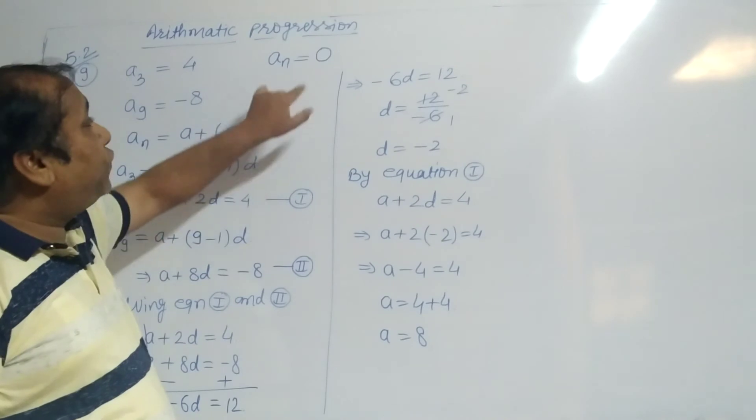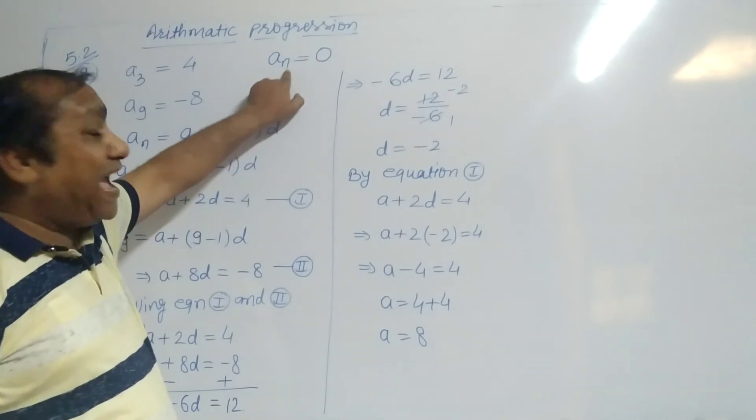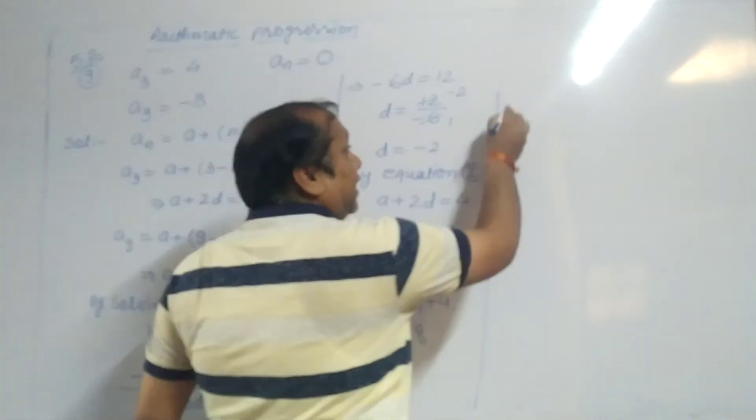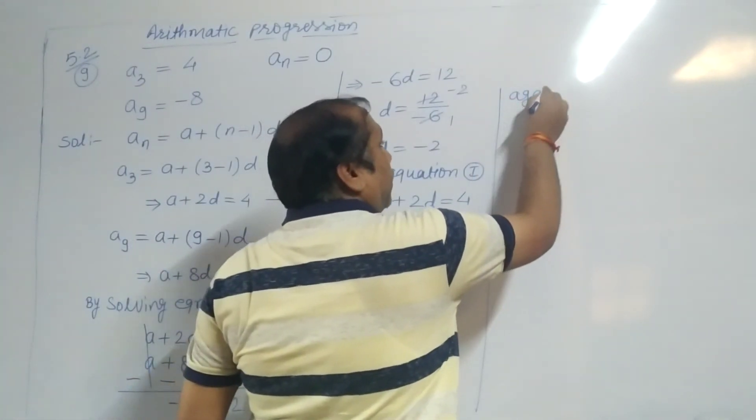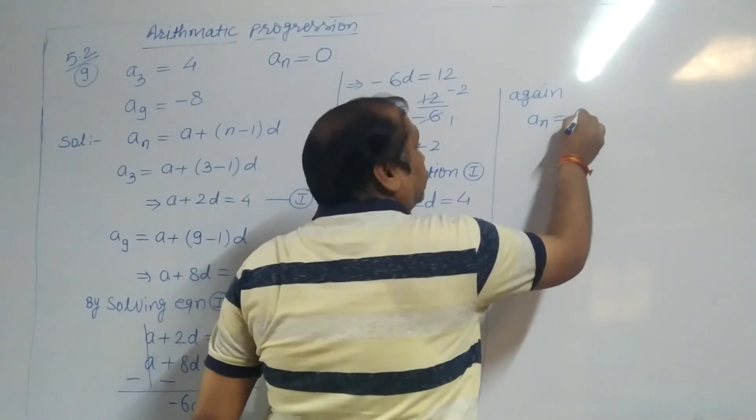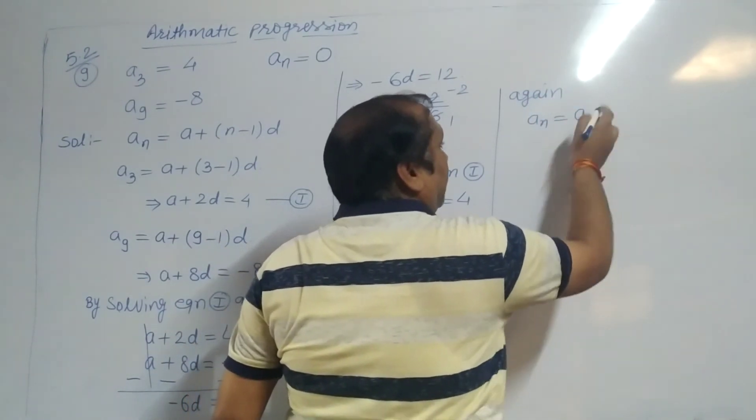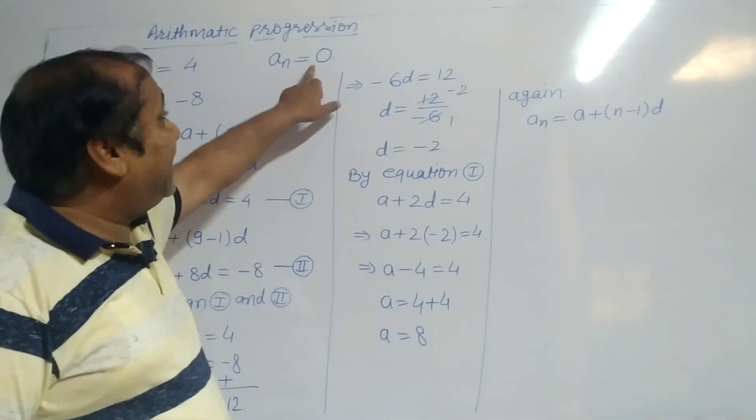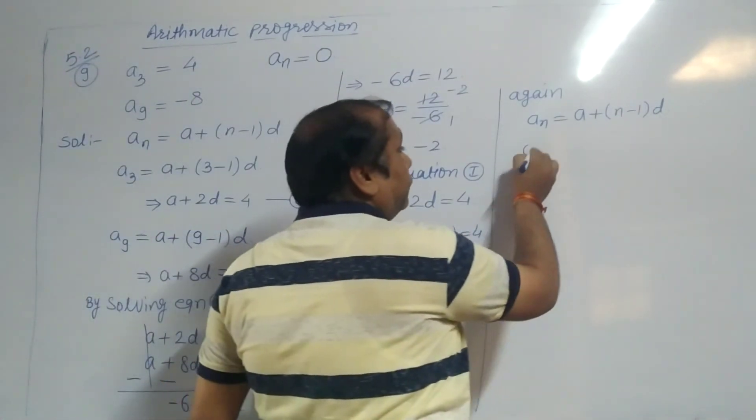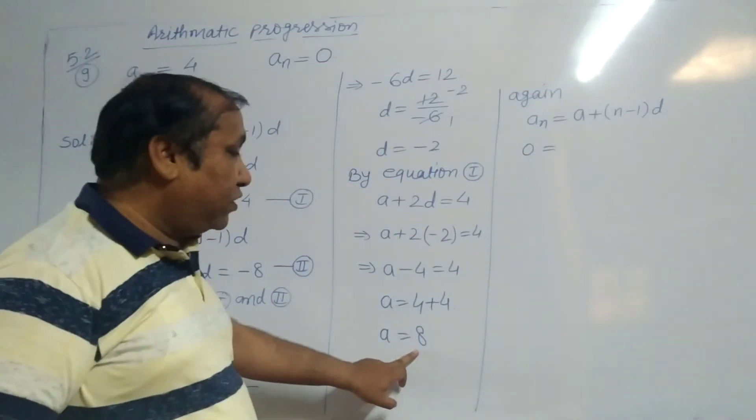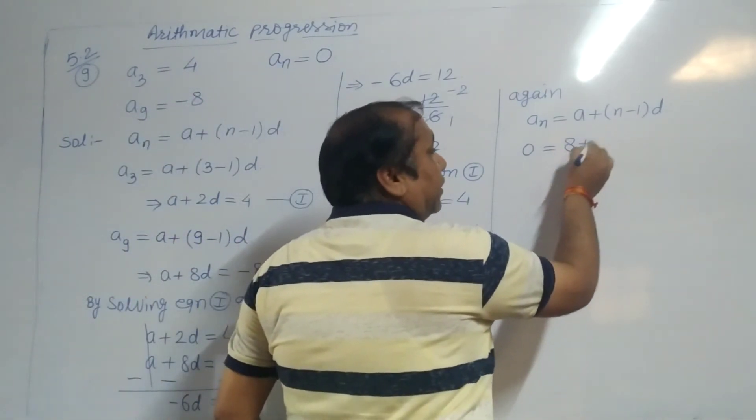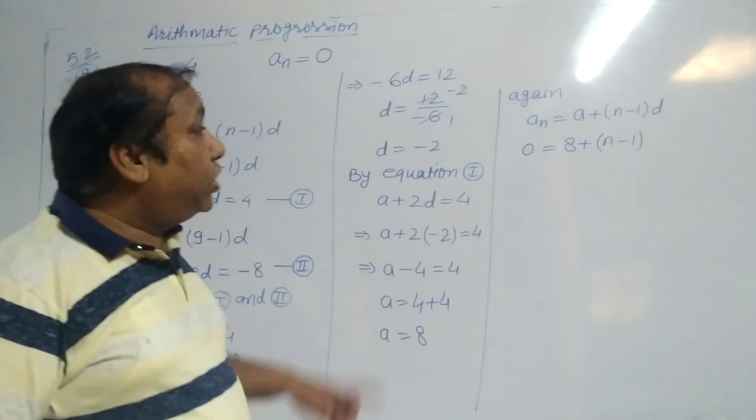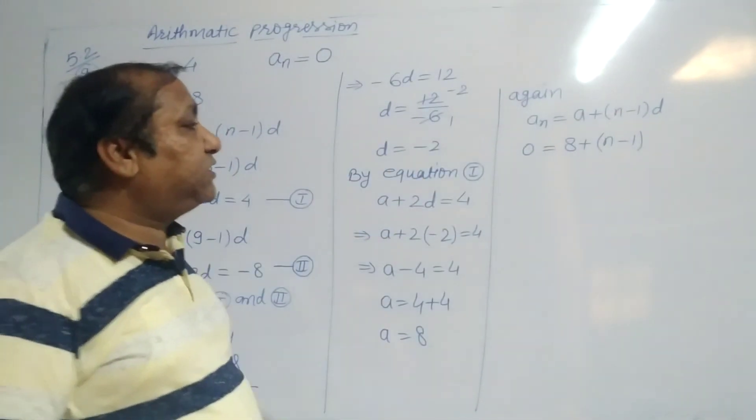Finally, we have to find the number of term N for which the term equals 0. So again, we use formula AN equals A plus N minus 1 into D. Here we put AN equals 0. A we have found is 8, plus N minus 1 into D, which we found is minus 2.